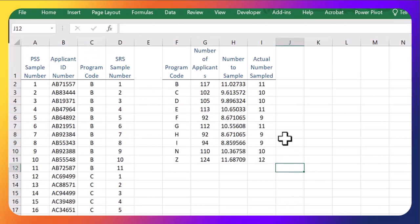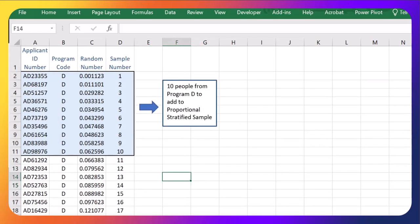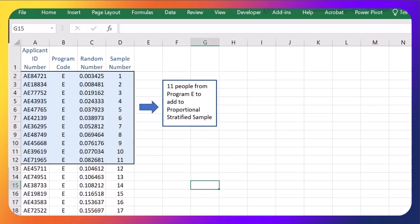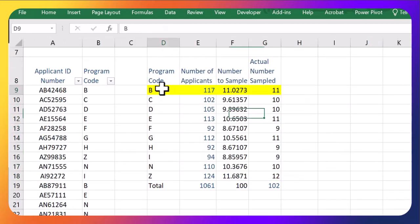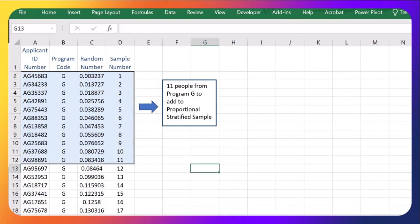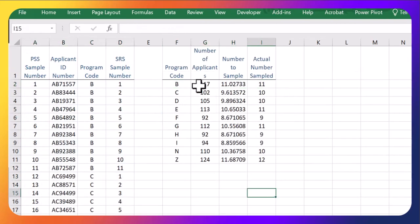So here we go. I actually went and sampled from each of the codes here, these program codes. I grabbed 11 from program B, 10 from C, 10 from D, and so on and so forth. According to our guideline here of how many to sample in each program. So I did this for each one. And I did that simple random sample from each group. And I did it proportional to how many applicants there were in each group.